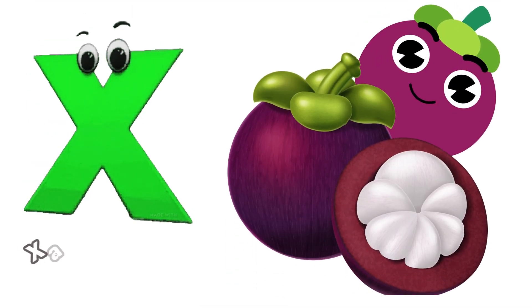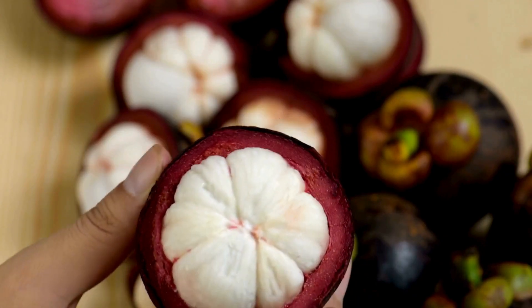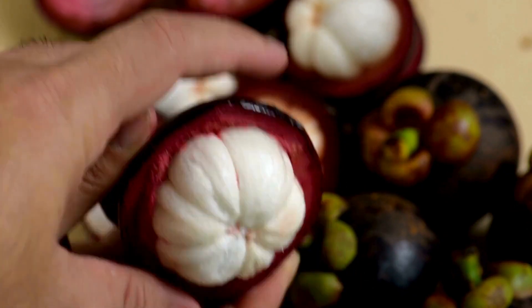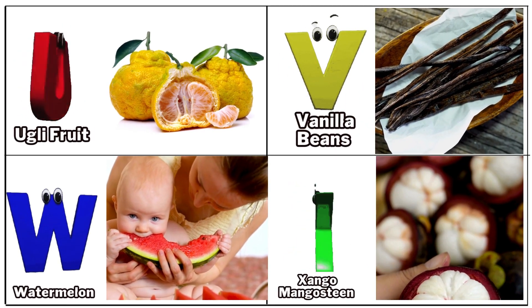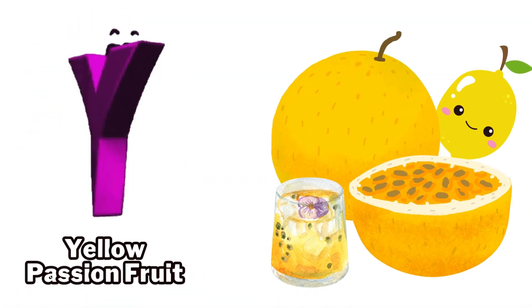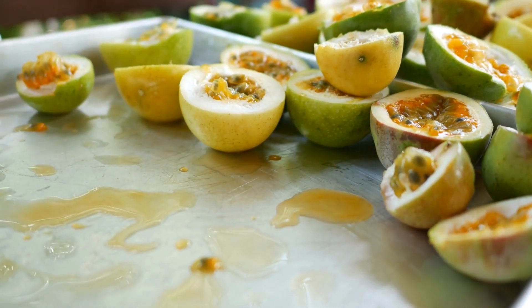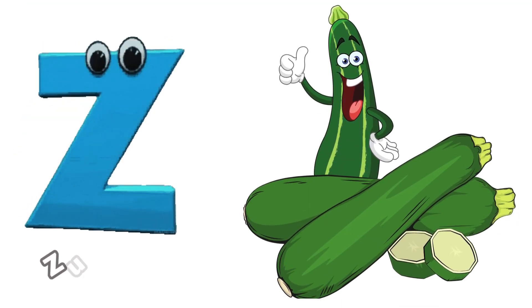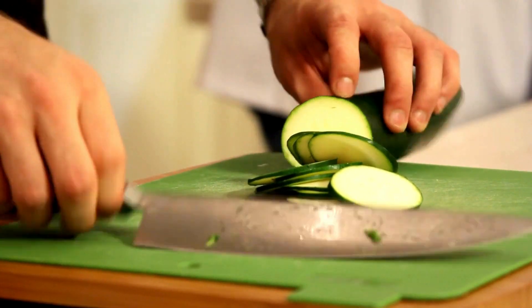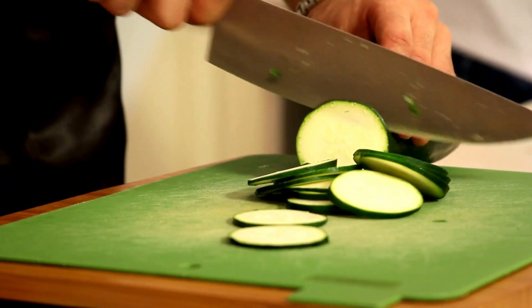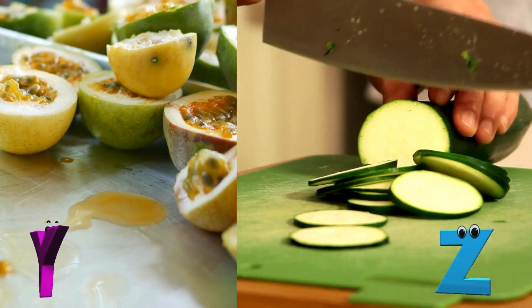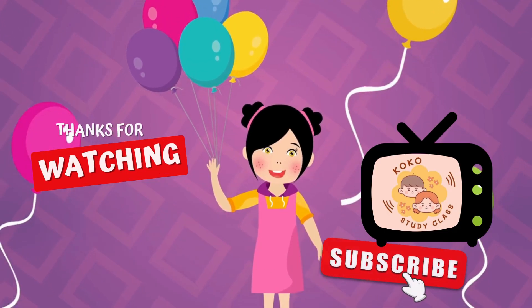X is for hexangomagnostine, z-z-hexangomagnostine. Y is for yellow passion fruit, yellow passion fruit. Z is for Zakini fruit, Z-Z-Zakini fruit.